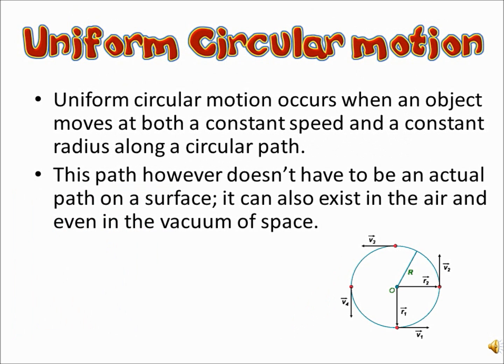Uniform circular motion involves an object moving at constant speed and radius. This means the object can't increase the magnitude of the radius or velocity, or else it would no longer be uniform circular motion.